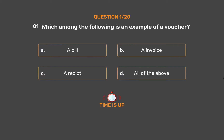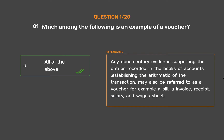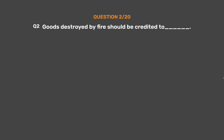The correct answer is option D: all of the above. Any documentary evidence supporting the entries recorded in the books of accounts, establishing the arithmetic of the transaction, may also be referred to as a voucher. For example, a bill, an invoice, receipt, salary and wages sheet.